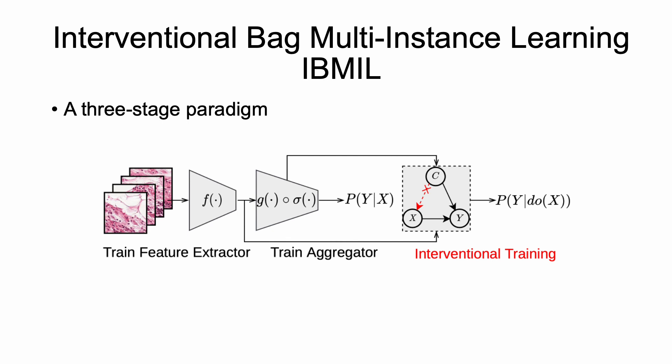Here is our solution, Interventional Bag Multi-Instance Learning, or IBMIL, which is a new three-stage paradigm. The main difference is that we add another stage of interventional training. This is the key to suppress the confounding bias by cutting off the backdoor shortcut, which means we won't allow the model to learn the spurious correlations between X and Y. And therefore, our IBMIL is fundamentally different from the existing schemes. As they are mainly based on the association or likelihood, while we use a causal intervention for bag prediction, which means we want to pursue the true causality between X and Y.